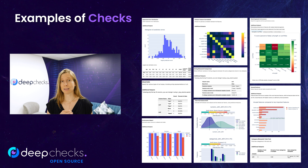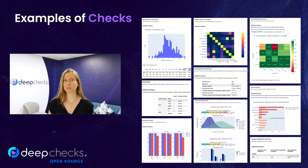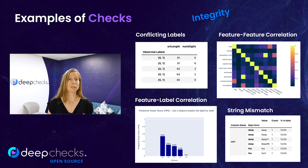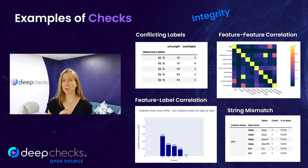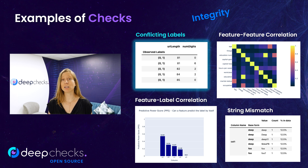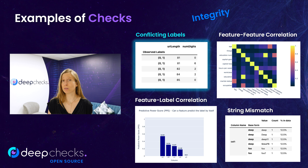DeepChex open source has many pre-built checks, each designed to find a different issue. Data integrity checks inspect the features and labels to find various problems with their content, structure, or problematic relations between them. One example is the conflicting labels check, which finds similar samples with different labels.